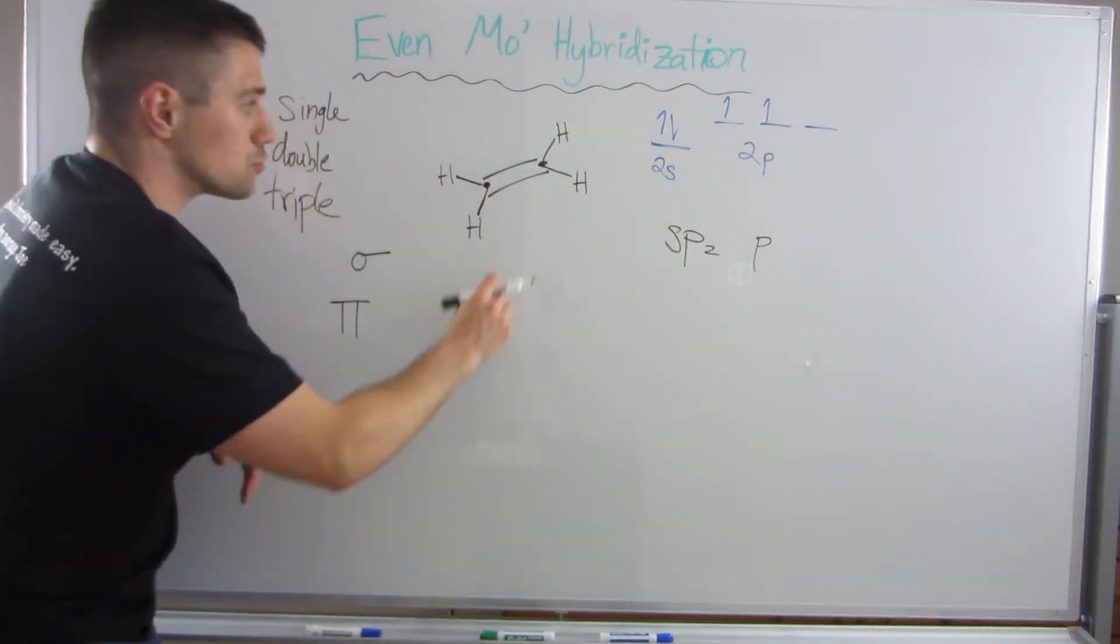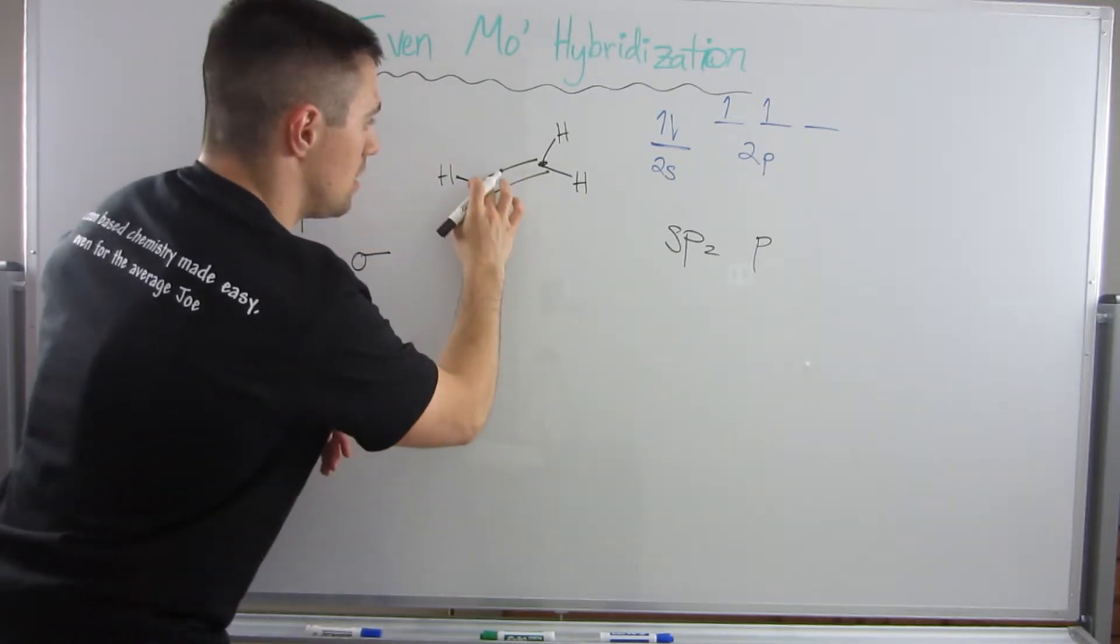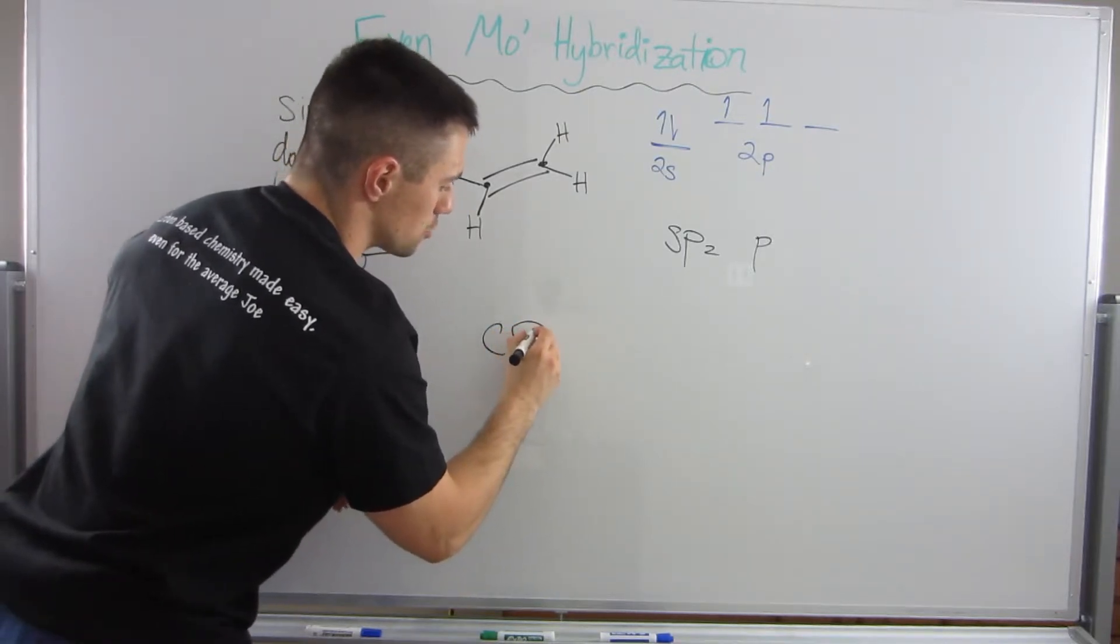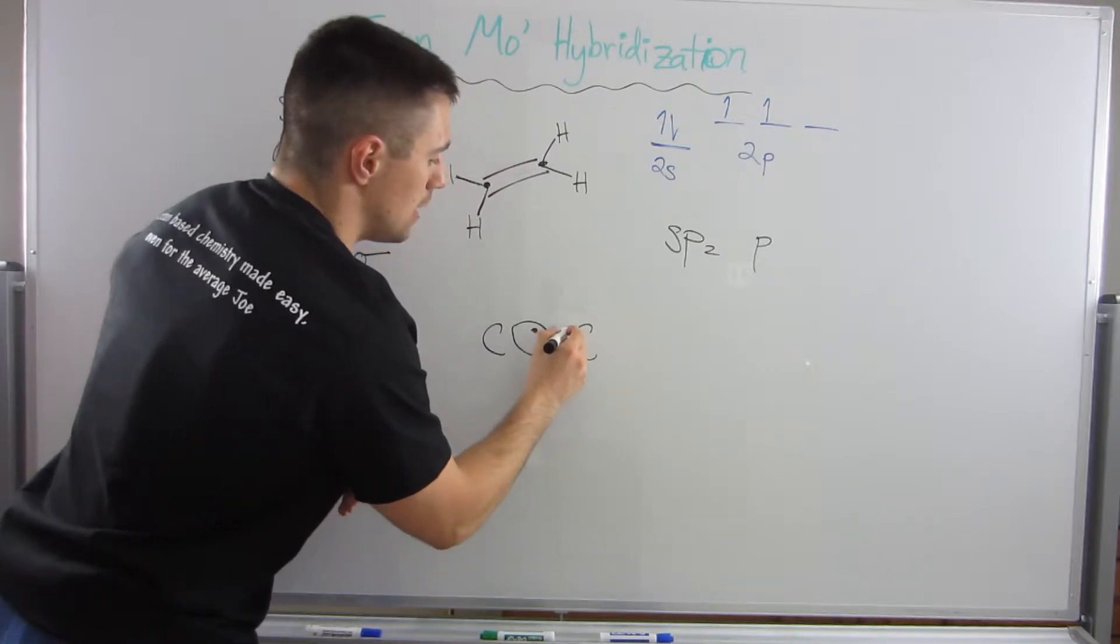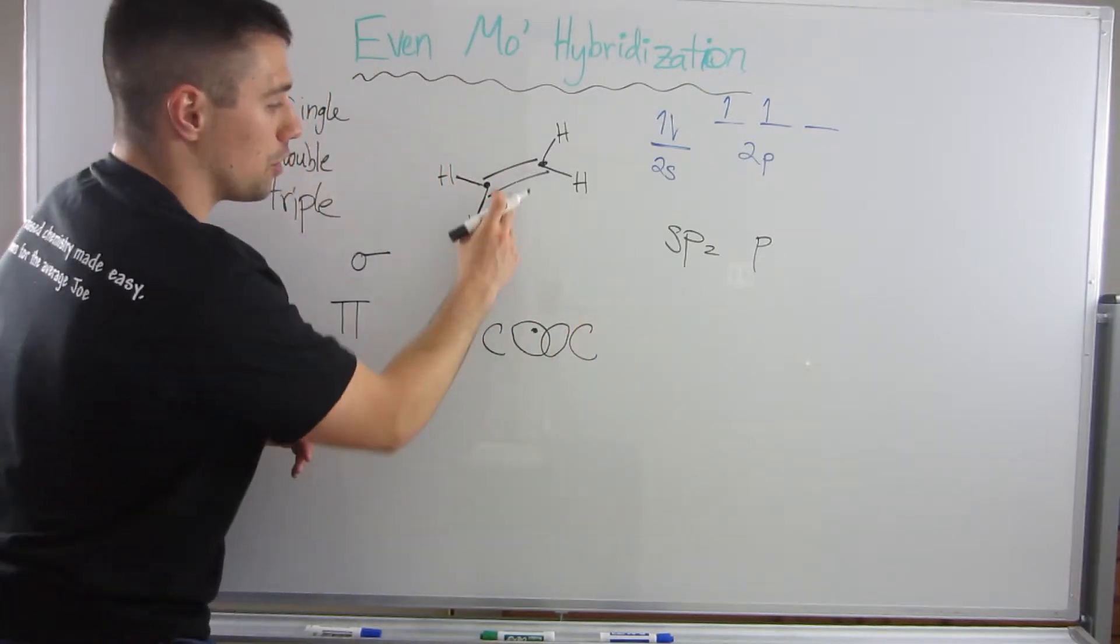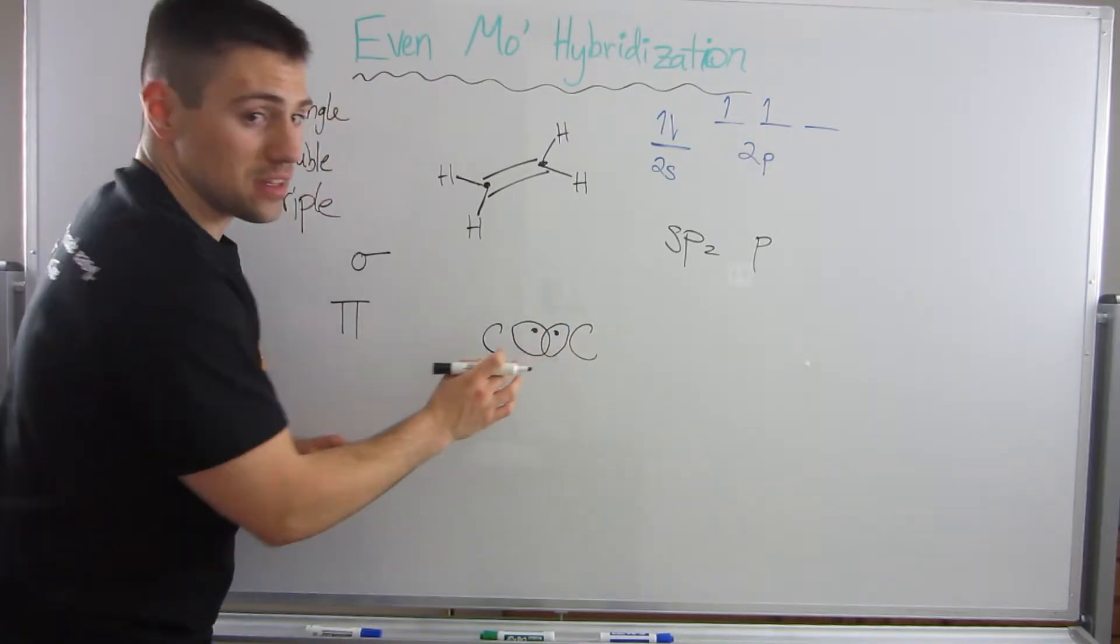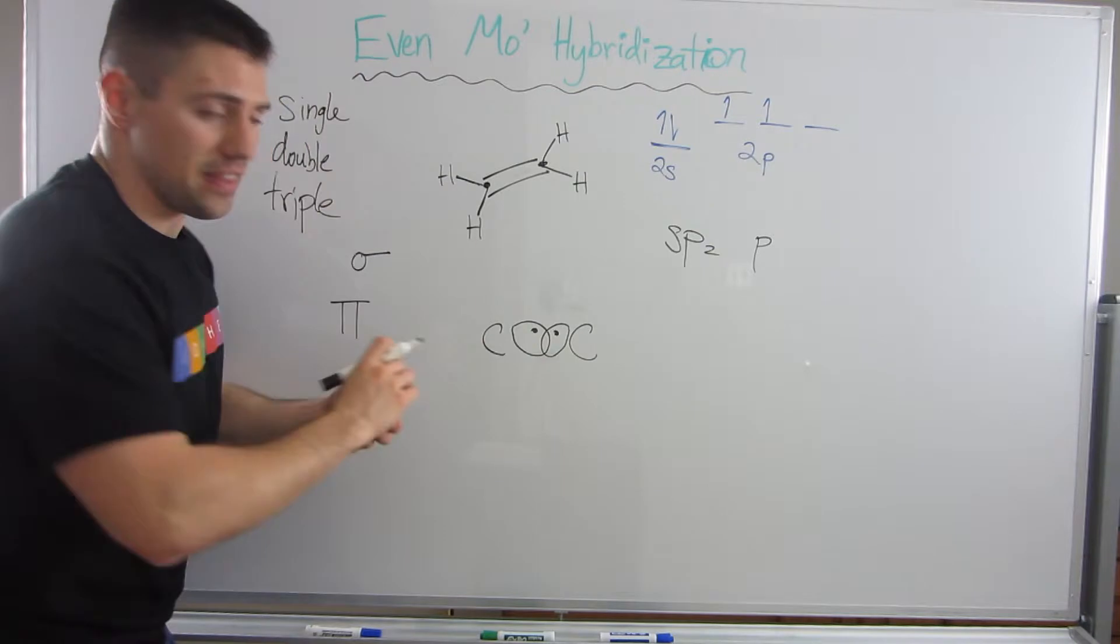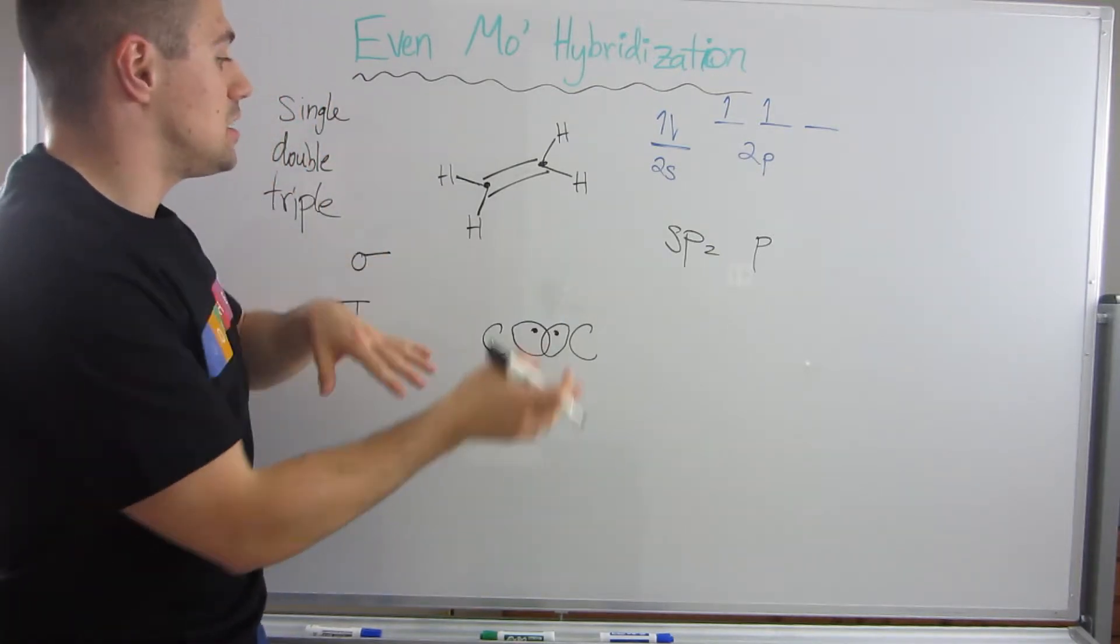If I draw this out more thoroughly, it looks like this. This carbon has an orbital with an electron in it, and this carbon also has an orbital that overlaps with the first carbon's orbital with an electron in it. This is the single bond that's really there—one of the bonds in this double bond. This is a sigma bond, that head-to-head overlap.